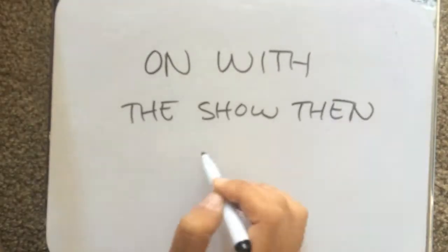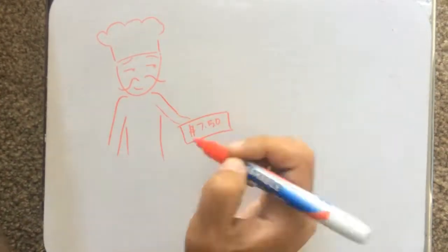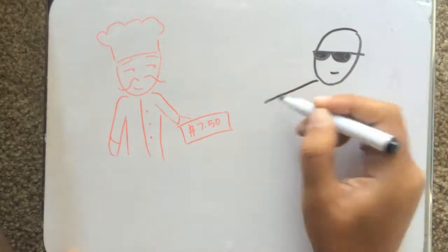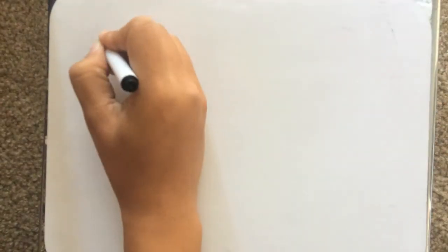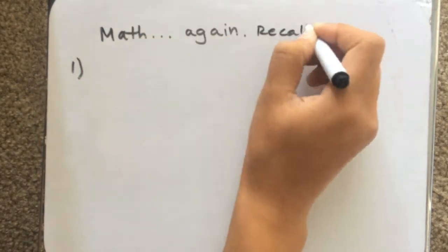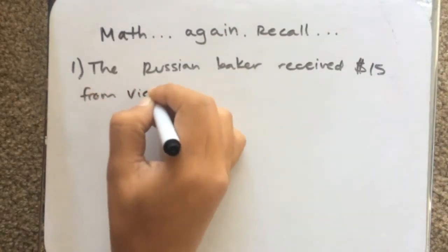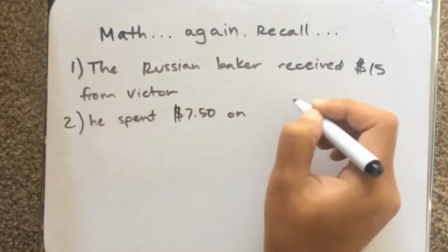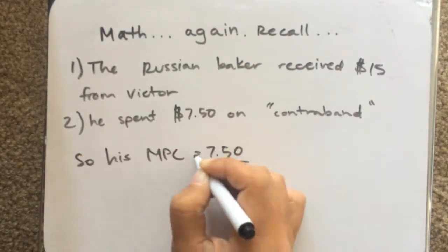From the sale, the Russian baker received a change of $15 in his real disposable income. He spent $7.50 on some cheap vodka, I mean, contraband. Notice here how his MPC is 0.5 as well, and can be calculated by the $7.50 he spent on the contraband over $15.